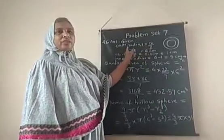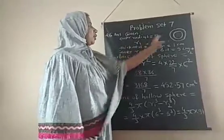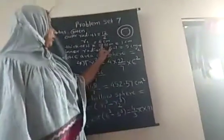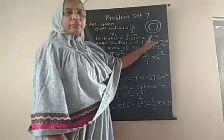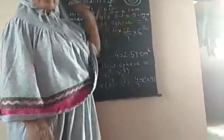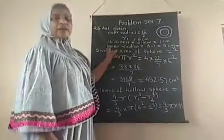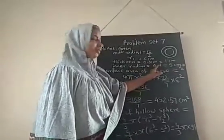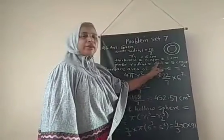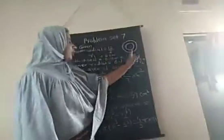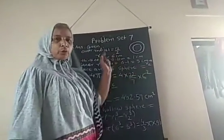The thickness of the sphere is given as 0.01 meter. We are converting this to centimeters by multiplying by 100, so it is 1 cm. Now calculating the inner radius: inner radius equals outer radius minus thickness, that is 6 minus 1, which gives 5 cm as the inner radius. Let that radius be R2.